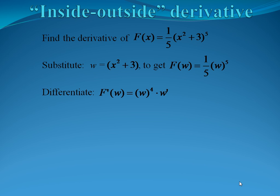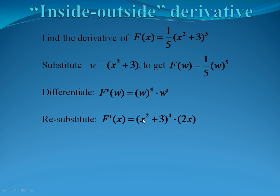When we differentiate, the 5 comes down and we subtract 1 from the power. The 5 multiplies the one-fifth, canceling the constant in front, and we get w to the fourth. Then we multiply by the derivative of the inside, w prime. When we resubstitute and plug back in for w, that gives us (x squared plus 3) to the fourth power. The derivative of x squared is 2x, and the derivative of 3 is 0. So our final derivative is 2x times (x squared plus 3) to the fourth.